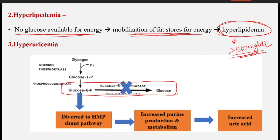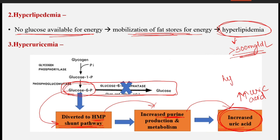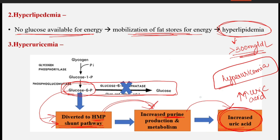Since the normal pathway is not active due to the absence of glucose-6-phosphatase, the accumulated glucose-6-phosphate is diverted to another pathway — the HMP shunt (hexose monophosphate shunt pathway) — which in turn causes increased purine production. The HMP shunt is the only source for production of ribose and NADPH, through which purine nucleotides are produced. These purine nucleotides are further degraded to form uric acid, the end product of purine catabolism. More purines produced means more catabolism, resulting in more uric acid — hence hyperuricemia.